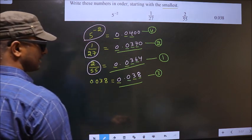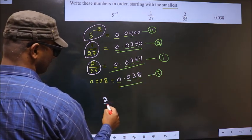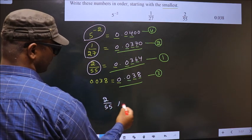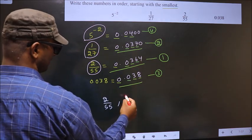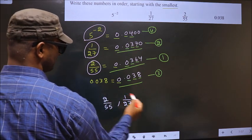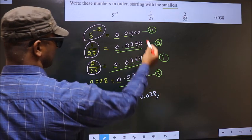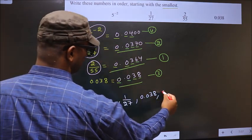So our answer is, in the first place, 2 by 55. Second place, 1 by 27. Third place, 0.038. Fourth place, 5 power minus 2.